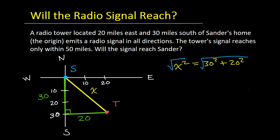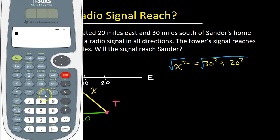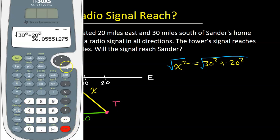But if you're allowed to use a calculator, this is quicker. So we're just going to put this into the calculator. So we're doing the square root of 30 squared plus 20 squared. So that turns out to be 36.1 approximately.